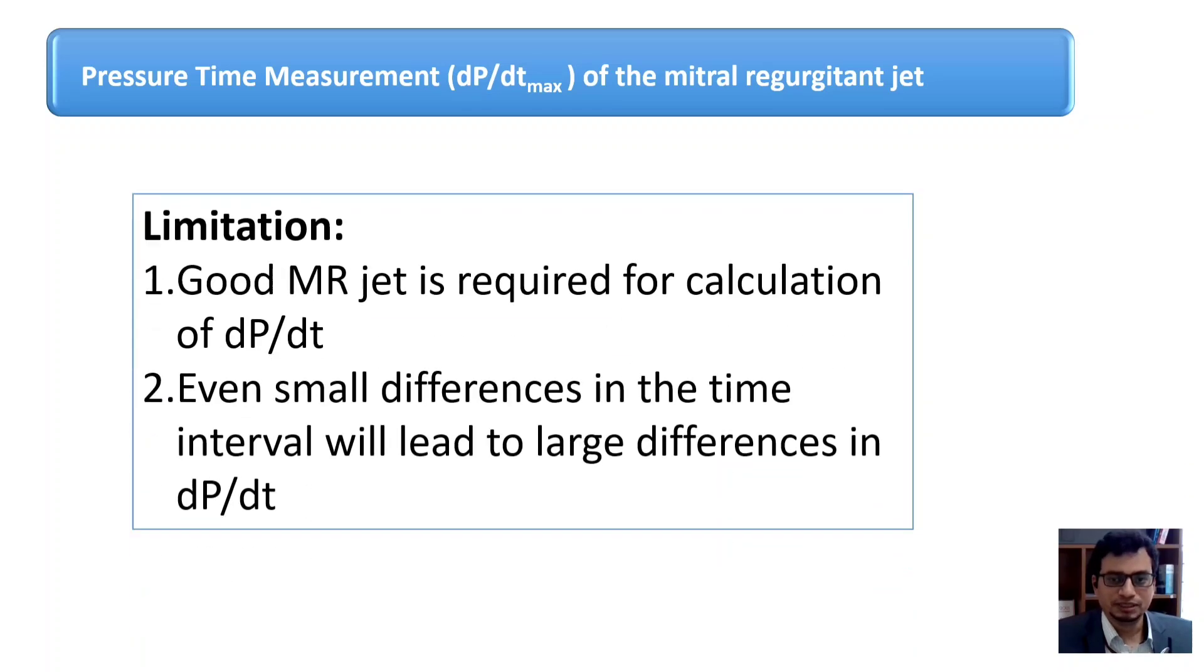Main limitation of this method is that a good MR jet is required for the calculation of DP over DT and even a small difference in the time interval will lead to large change.